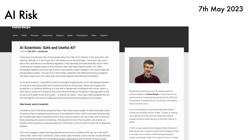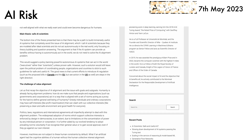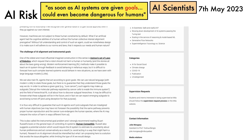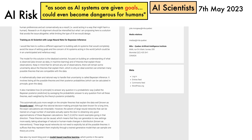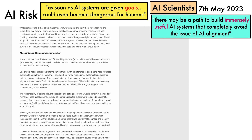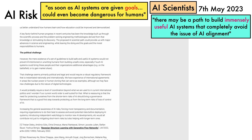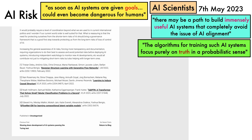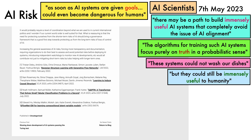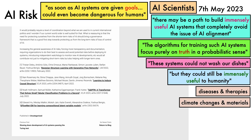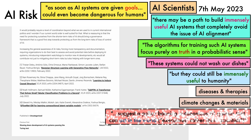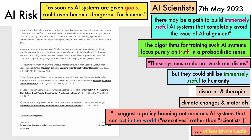On to AI risk. AI pioneer Yoshua Bengio has shared a proposal for what he describes as AI scientists. He observes that as soon as AI systems are given goals, they may create sub-goals that could lead them to becoming dangerous for humans. However, there may be a path to build immensely useful AI systems that completely avoid the issue of AI alignment — algorithms for training such systems focus purely on truth in a probabilistic sense. These systems, which use Bayesian inference to answer questions, could not wash our dishes, but could help us understand diseases, develop therapies, understand climate change, and find materials for efficient carbon capture. Bengio notes that his outlook suggests a policy of banning autonomous AI systems that can act in the world — executives rather than scientists — unless proven safe.